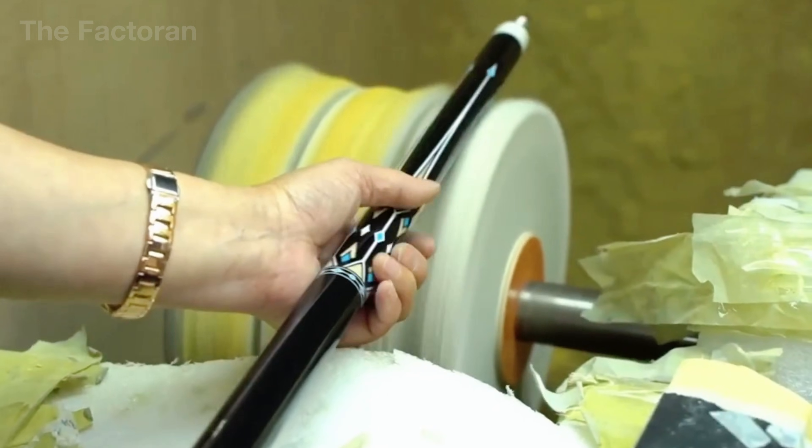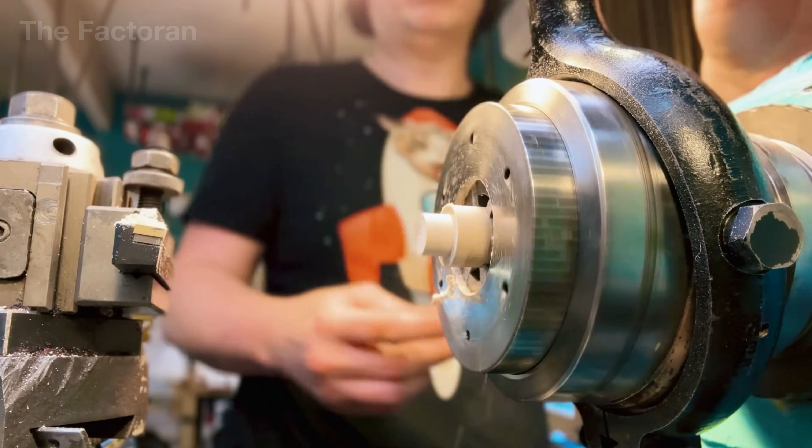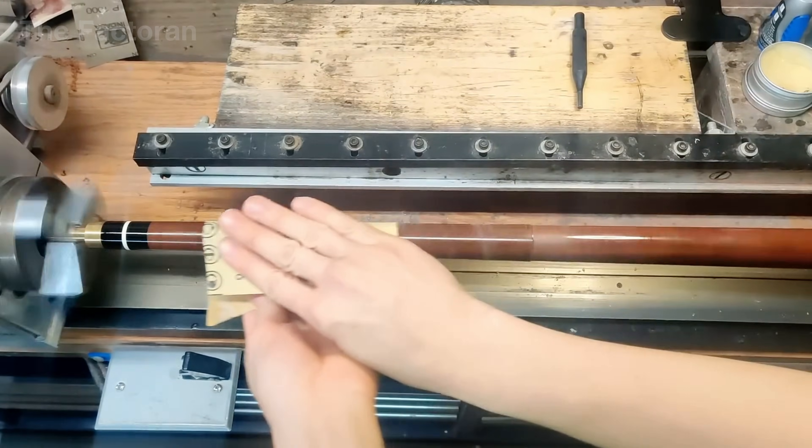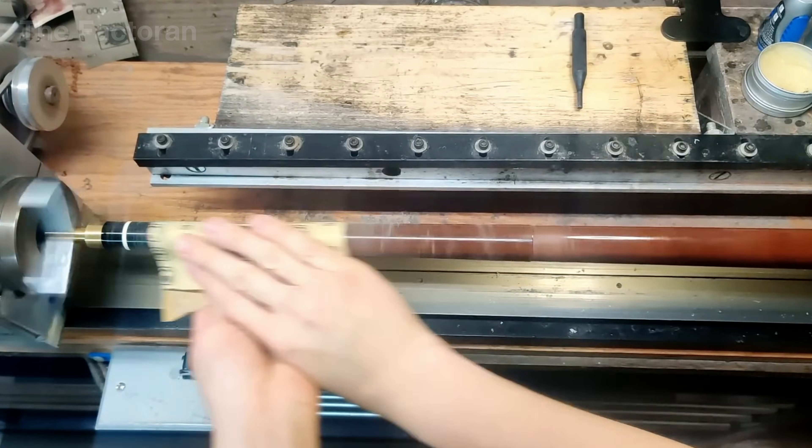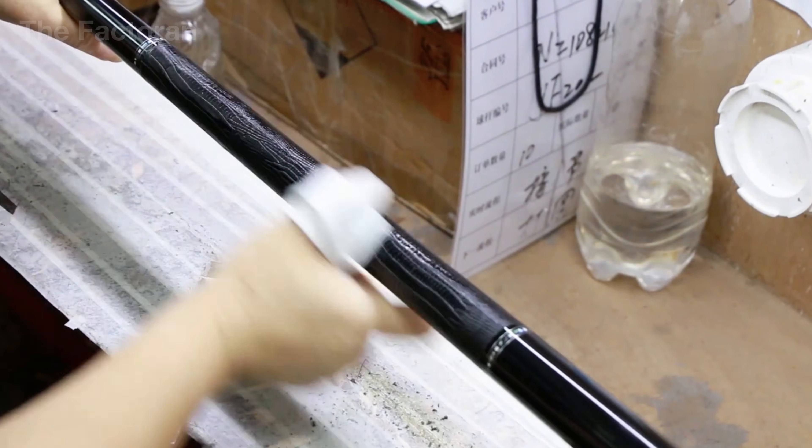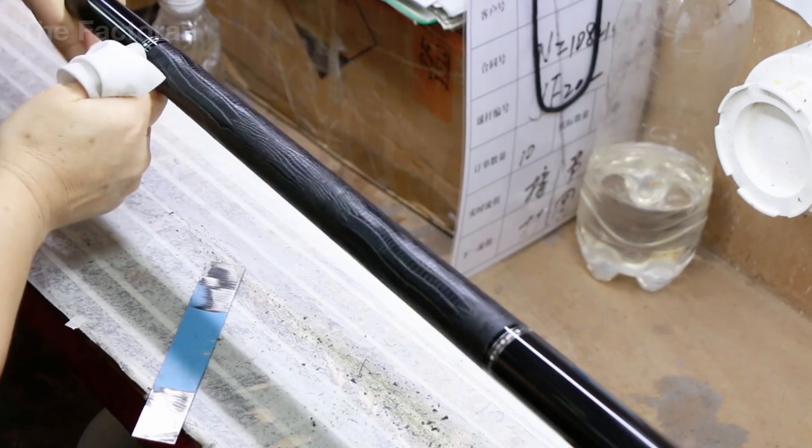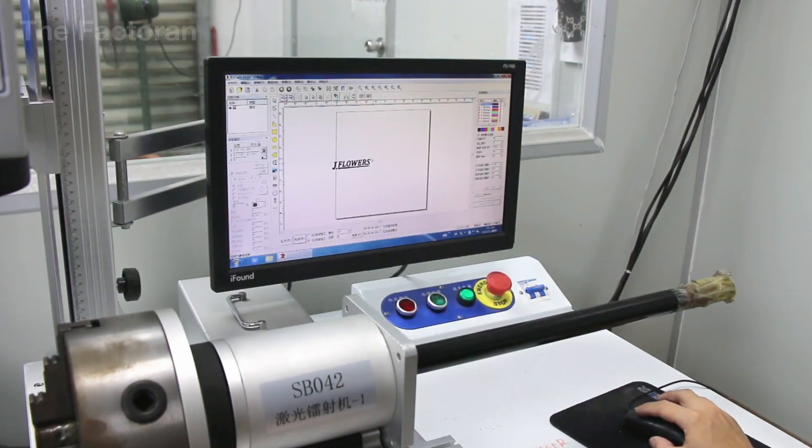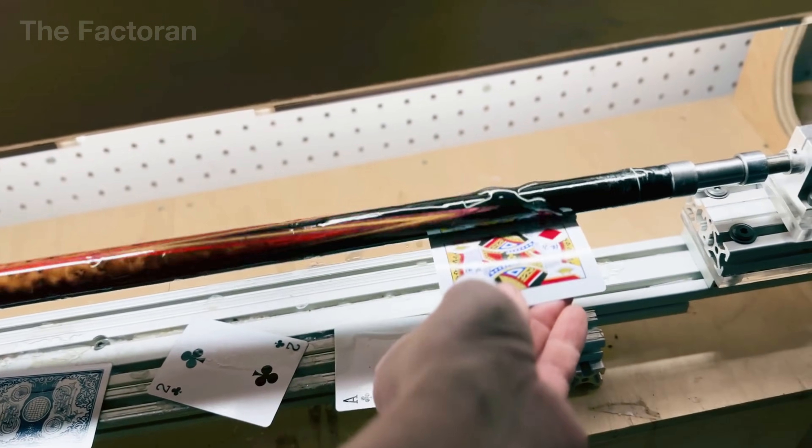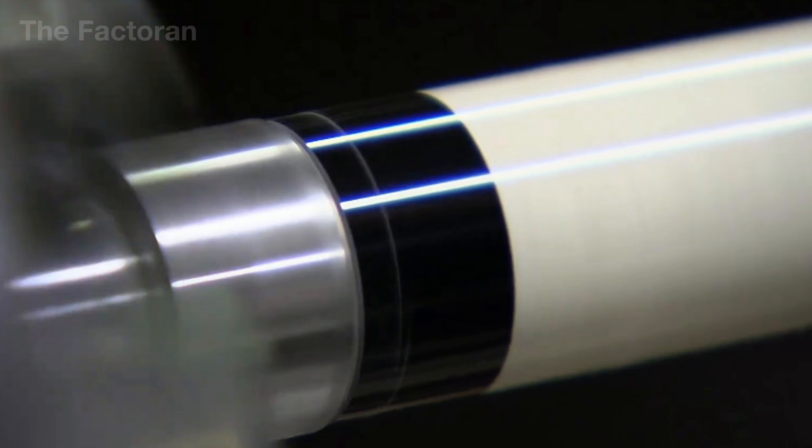After the assembly is fully completed, the cue is placed on a lathe where it undergoes multiple rounds of sanding and polishing, both manual and automated, to remove every remaining machining mark and create a surface that is smooth, deeply glossy, and effortlessly slick, delivering a truly premium feel in the player's hand. At the same time, the joint is treated as a critical precision component and is polished separately with equal care.